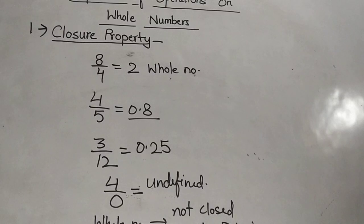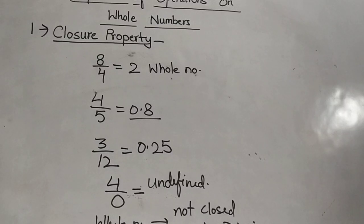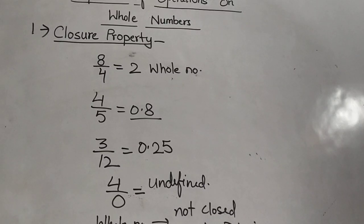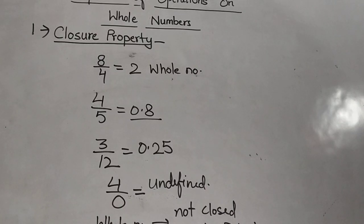In this video we have discussed the closure property of whole numbers, in which we learned that whole numbers are closed under addition and multiplication, but not closed under subtraction or division. When adding or multiplying two whole numbers, we always get a whole number as a result, but this is not guaranteed for subtraction or division. I hope this video was helpful. We will see the next property of whole numbers in the next video. Thank you.